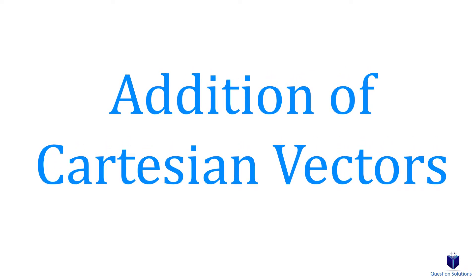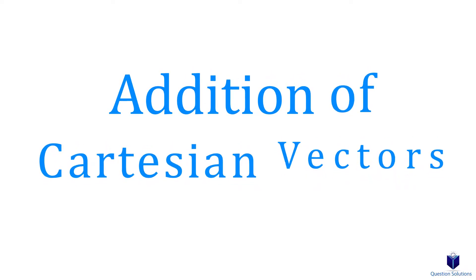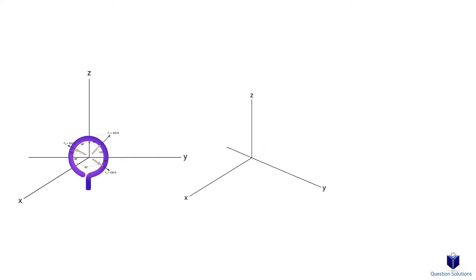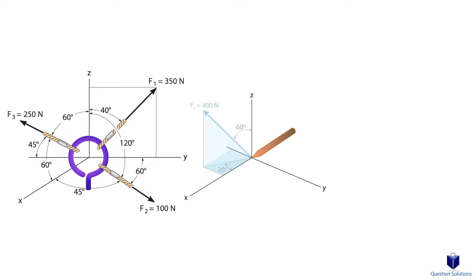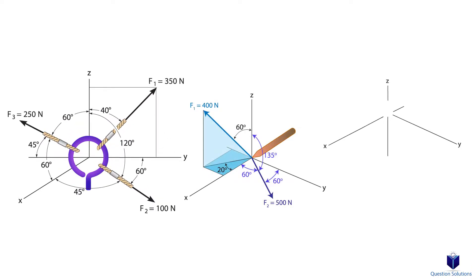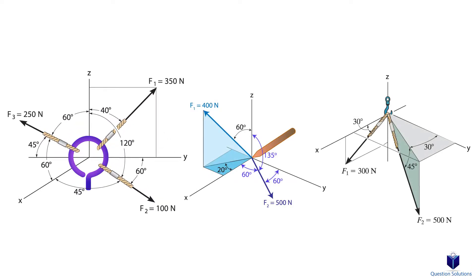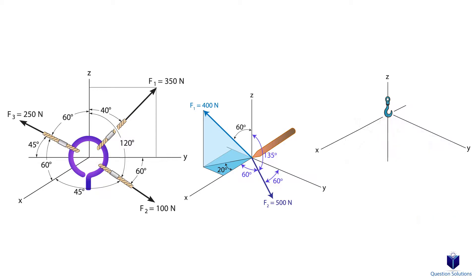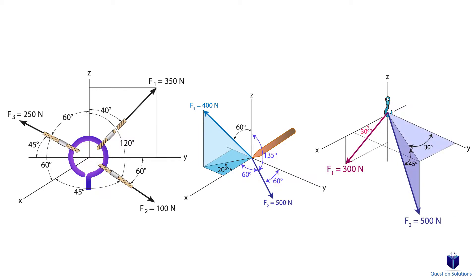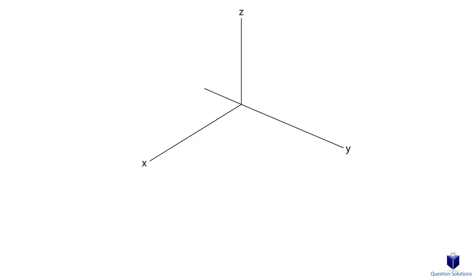When we have force vectors drawn in 3 dimensions, breaking them down to cartesian vector form will help out a lot. We're going to learn how we can break forces into components in cartesian form, how to add them and find the magnitude. Most of this will be explained through examples, but before we get there, let's go over some basics to keep in mind.